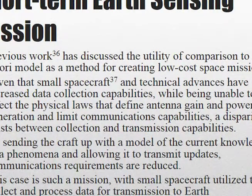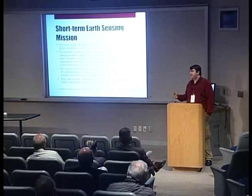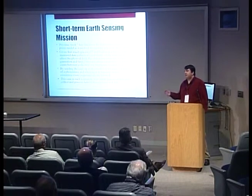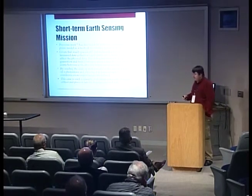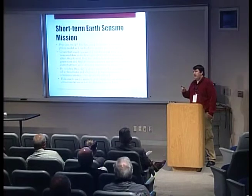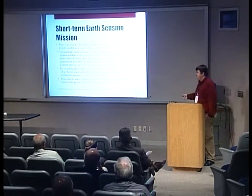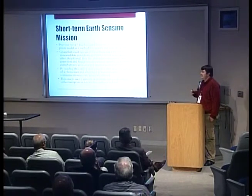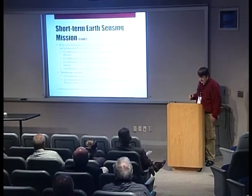The short-term earth sensing mission concept is that on a platform as small as a CubeSat-sized box, you have a lot of collection capability. If you put a camera on it and supply power so it's taking a picture every second or multiple times per second, you can generate more data than you could probably ever actually transmit. This mission is based upon a model-based architecture — using a model and transmitting discrepancies — which really plays into the communications model for the mission.